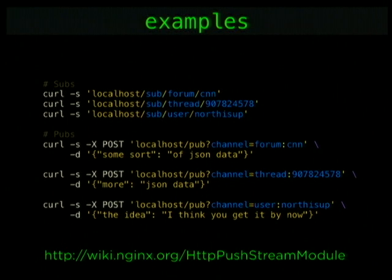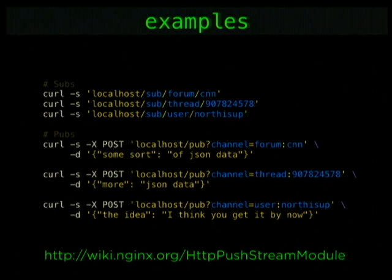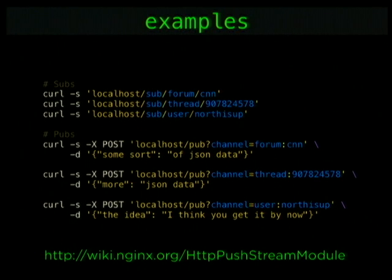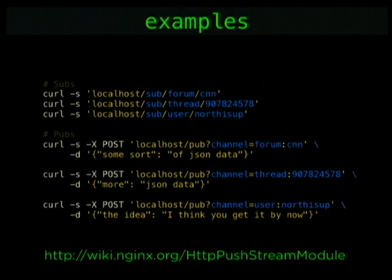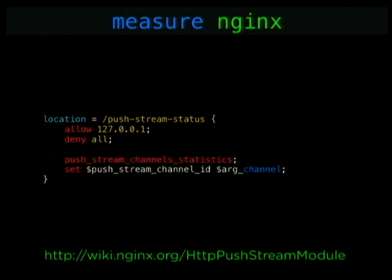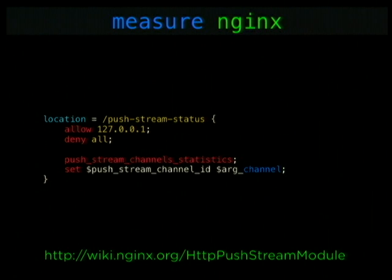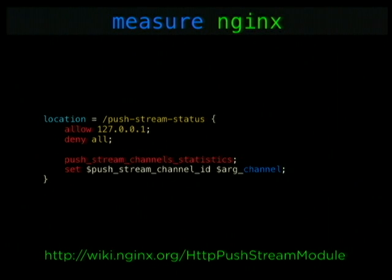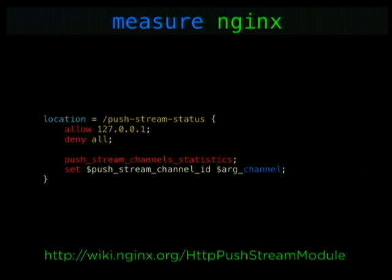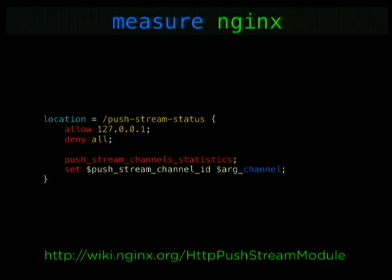The top config shows how you listen to channels and the bottom shows how you post to specific channels. Post to all channels because it's awesome — the only reason I could make that globe map was having all that extra data. It also has built-in measurements via the push stream status endpoint, giving aggregate or individual information.